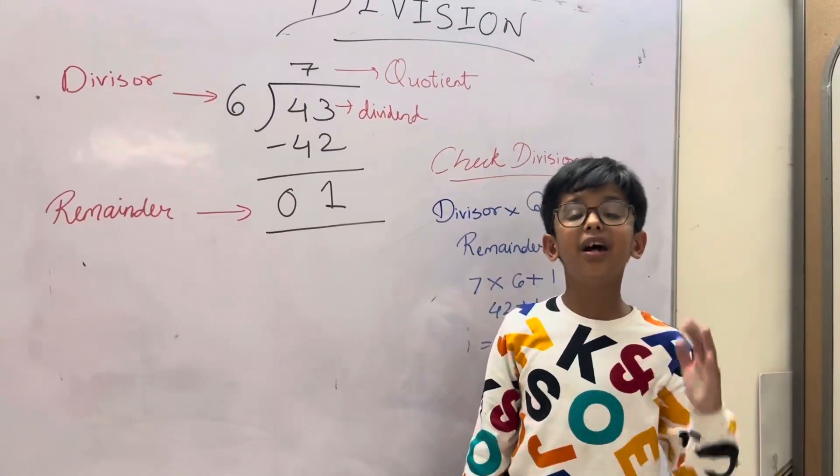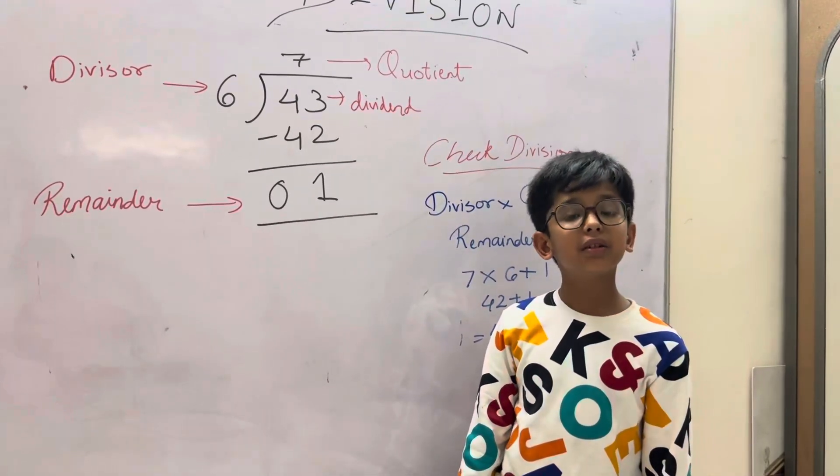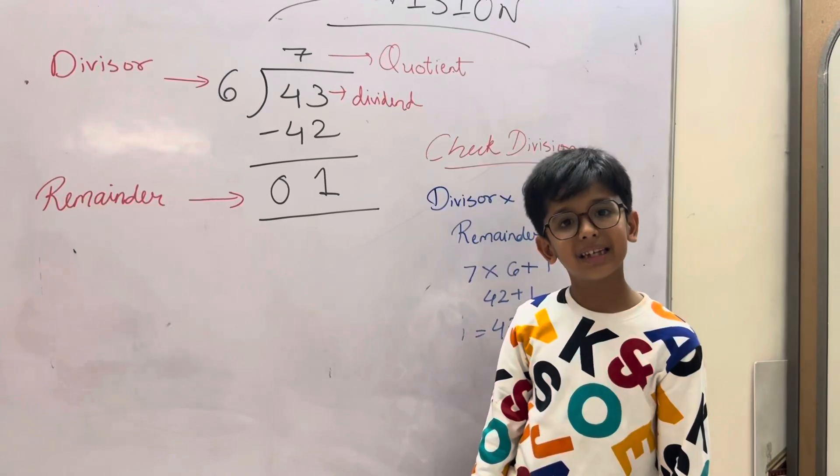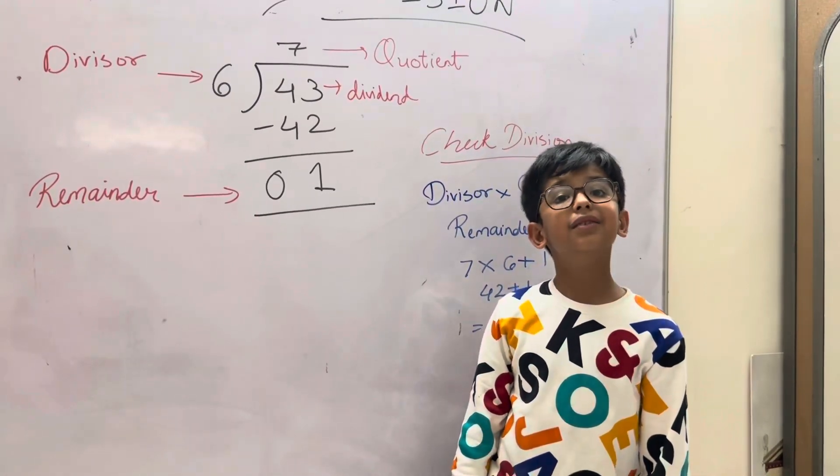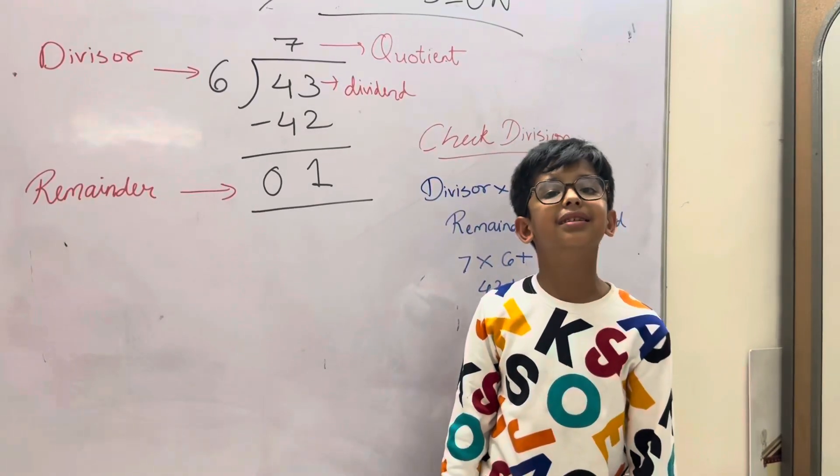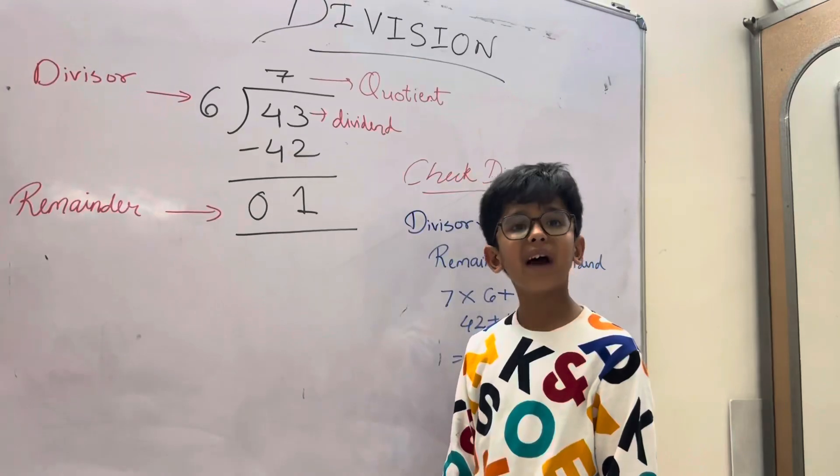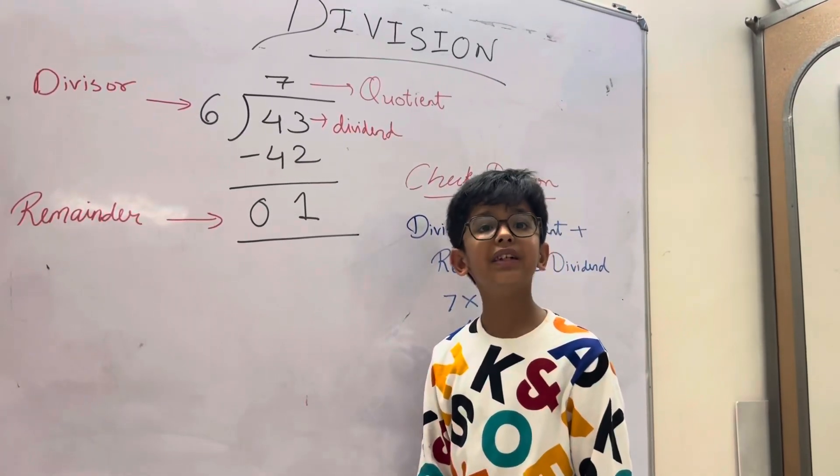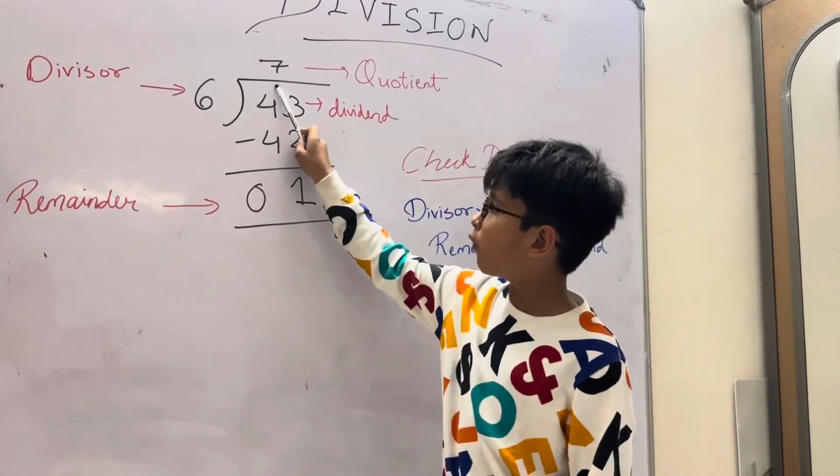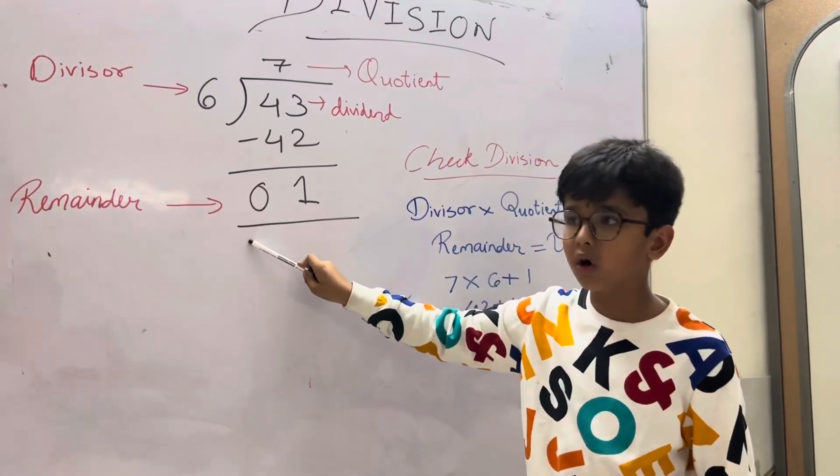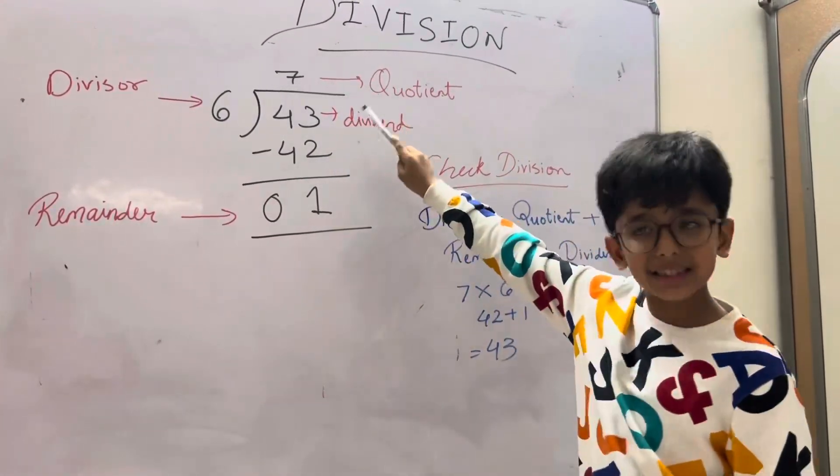Now we start with the 6 table. 6 ones are 6, 6 twos are 12, 6 threes are 18, 6 fours are 24, 6 fives are 30, 6 sixes are 36, 6 sevens are 42. We have found the nearest one. So we subtract. 3 minus 2 is equal to 1, and 4 minus 4 is equal to 0. So the remainder is 1 and the quotient is 7.